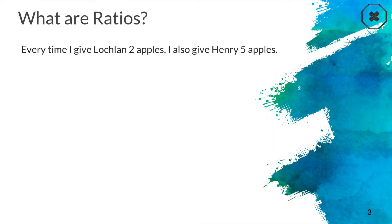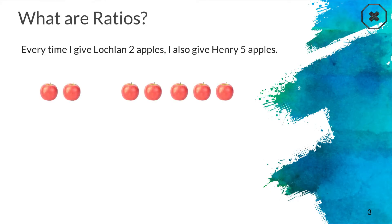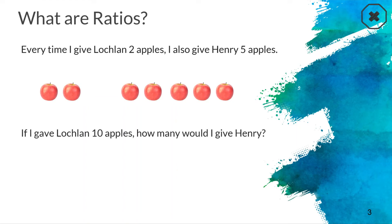To start us off, let's talk about what a ratio is with an example. Let's say every time I gave Lachlan two apples, I was also going to give Henry five apples. So every time Lachlan gets two, Henry gets five. For example, if I gave Lachlan four, I would need to give Henry ten apples. So the question is: if I ended up giving Lachlan ten apples instead of two, how many apples would I need to give Henry to keep this ratio of two to five?